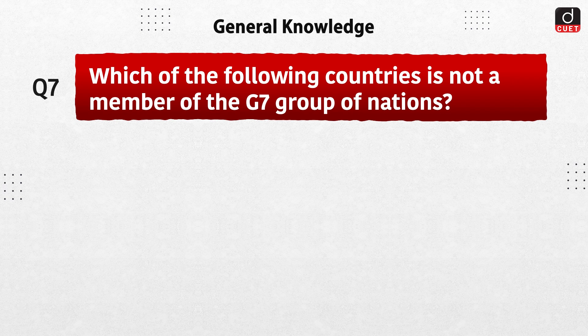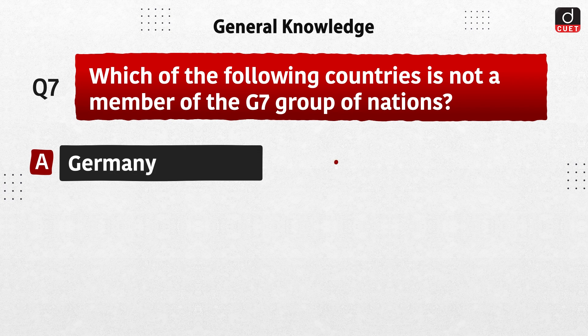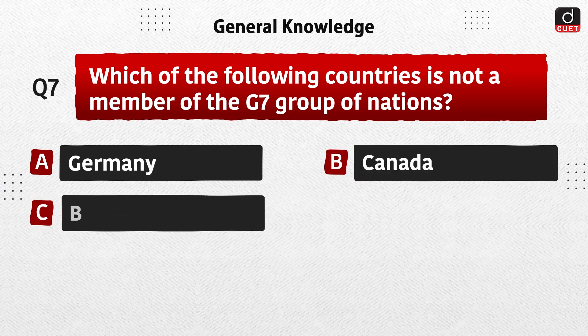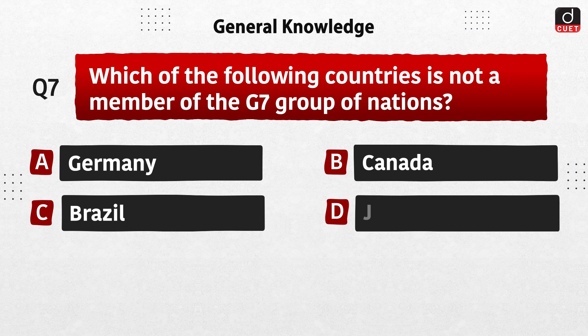Next question: which of the following countries is not a member of the G7 group of nations? Germany, Canada, Brazil, or Japan? The correct answer is option C, Brazil.